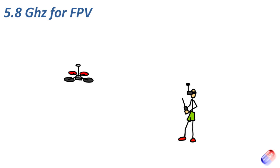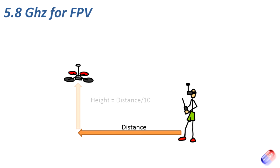So with those two issues in mind — not standing in front of a wall and not intending to fly behind obstructions — the other thing you can do to ensure a decent flight is follow the 10% rule. Whatever distance you are from the model, keep the height at about 10% of that distance. So if you fly the model 100 feet away, keep it 10 feet off the ground. Flying 200 feet away, keep it 20 feet off the ground. This helps with reception and avoids the problems we've discussed, so remember that 10% rule when you're flying.